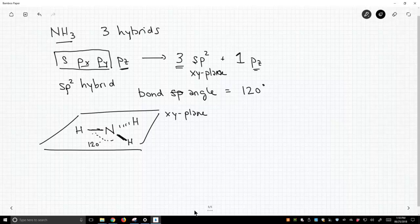And of course, as we go around 120 degrees three times, we do a 360, and these three NH bonds occupy this xy plane.